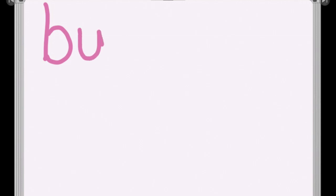I want you to get your pencil, paper, or your whiteboard and your marker. The words we're going to write are going to have short U, short I, A, and E. The first word is 'buzz': B... uh — write that short U — Z. It gets two Z's.